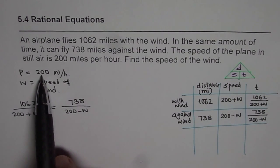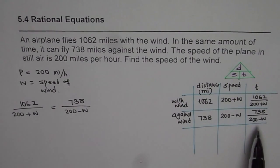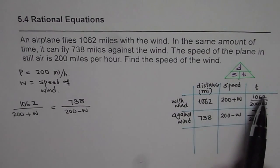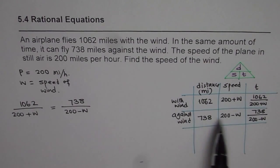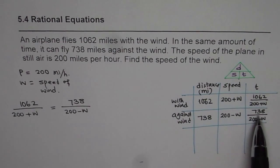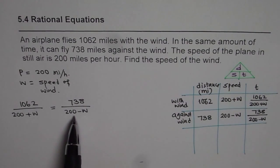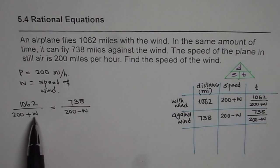We have defined let the speed of the wind be w. Plane speed is given to us as 200. We made a table showing distance, speed, time relationship. When the plane is going with the wind and when against the wind. Since the time is constant, same, exactly same, we have equated these two times and found one equation. Now this is a rational equation since we have w the variable in the denominator.